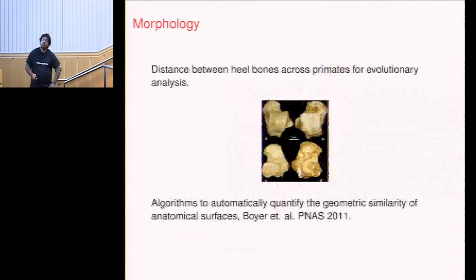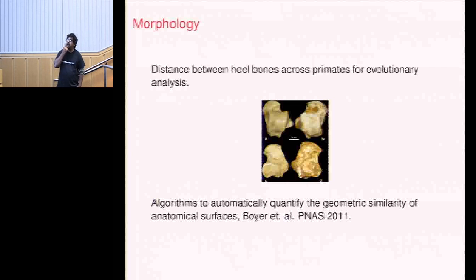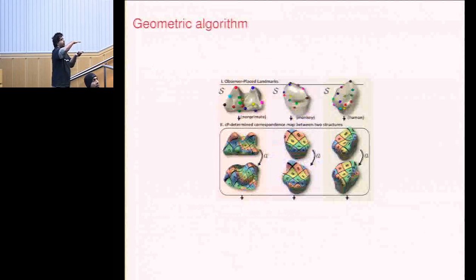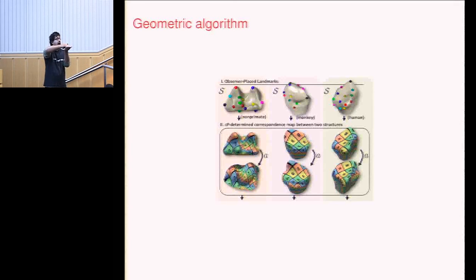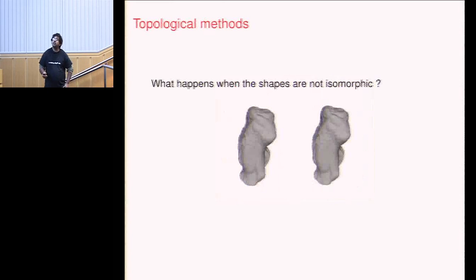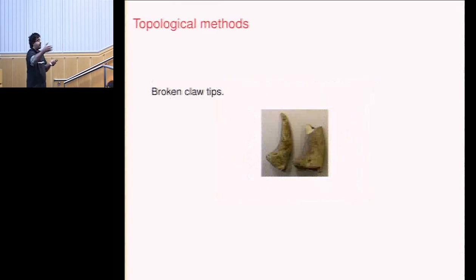This raises the question: how do you measure distance between shapes and surfaces? My colleague Doug had been working with Ingrid Dubasheeth at Duke using conformal maps — you take a tooth, do a conformal map to a disc or sphere, put down points, flatten it out preserving angles and volumes, and then measure distance between the maps using a variational distance. It's beautiful and elegant work. But the problem is: what happens if your shapes are not homeomorphic, or if something breaks — like broken bones? Those methods fall apart. What do you do for fruit fly wings that qualitatively change shape under different environments?